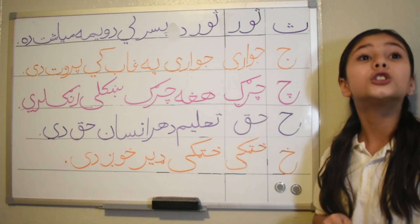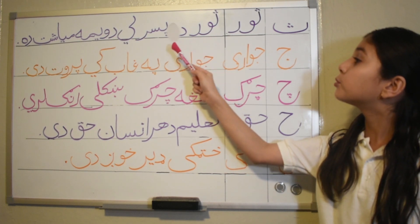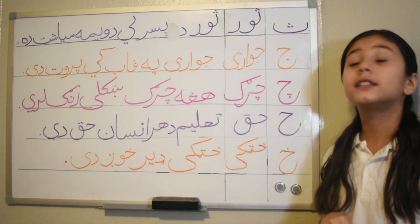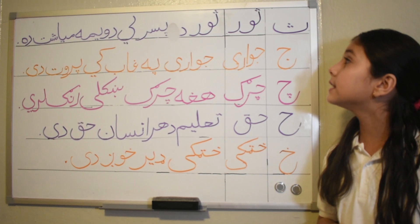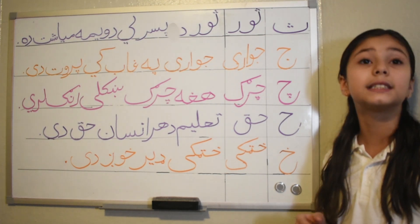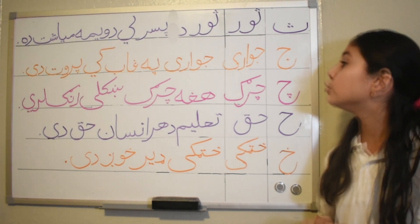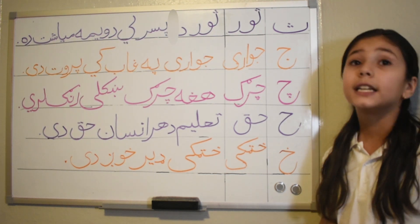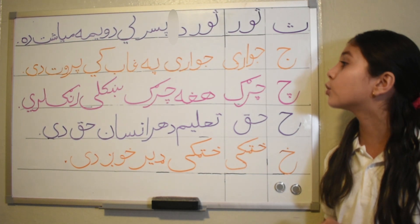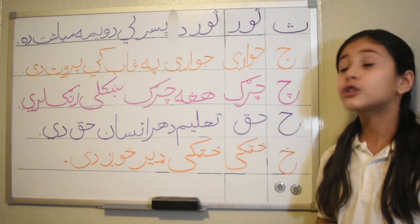That translated is: sour is spring second month. And the next one is 'Juwarae Paghapke Prutti,' and that translated is: the corn is on the plate.